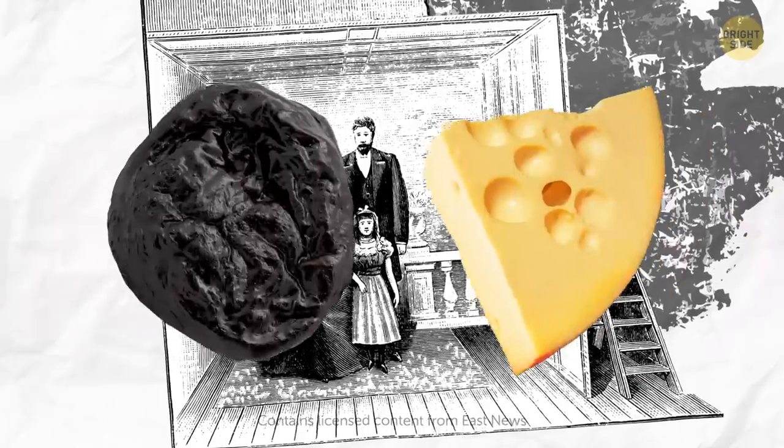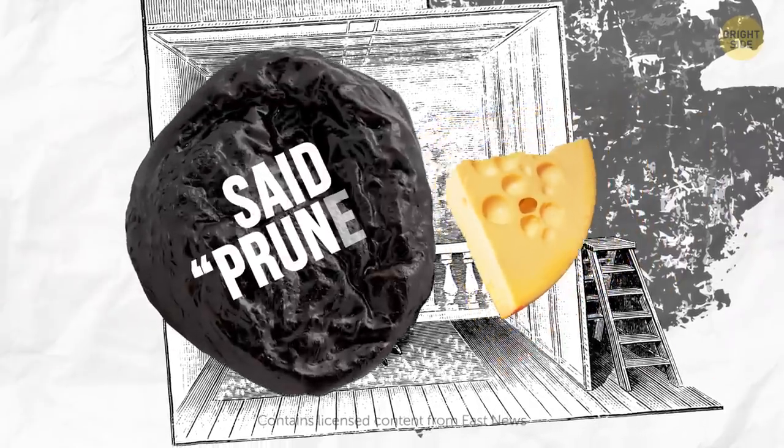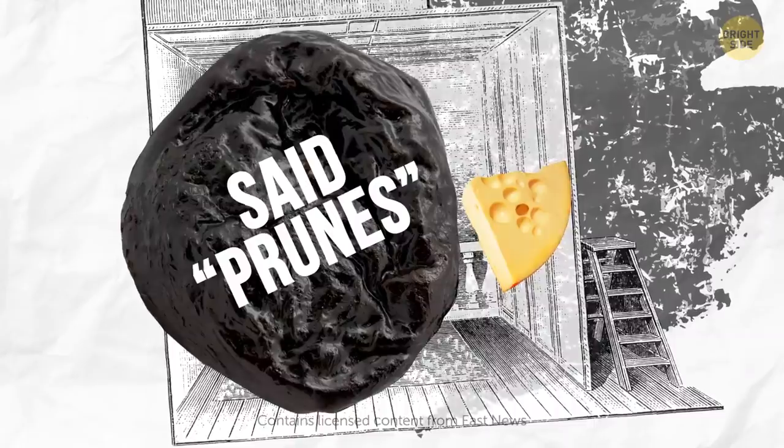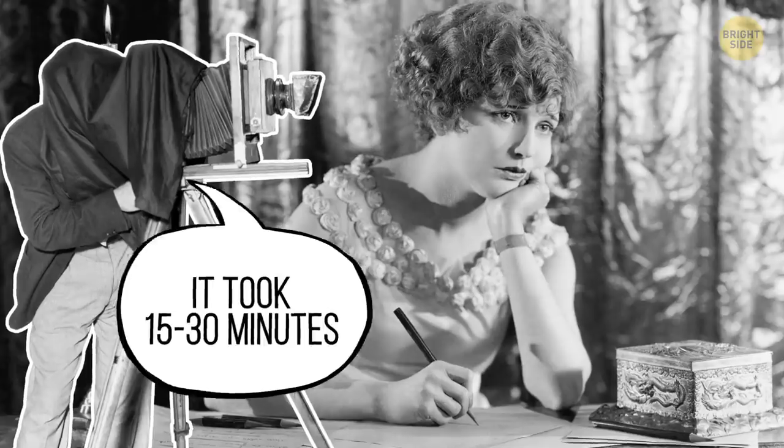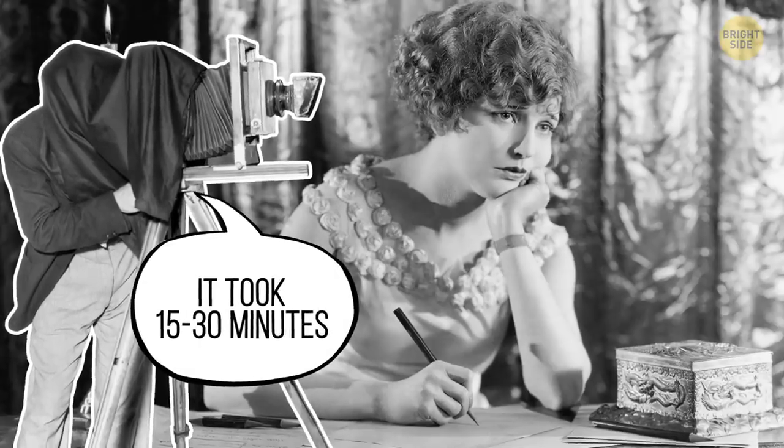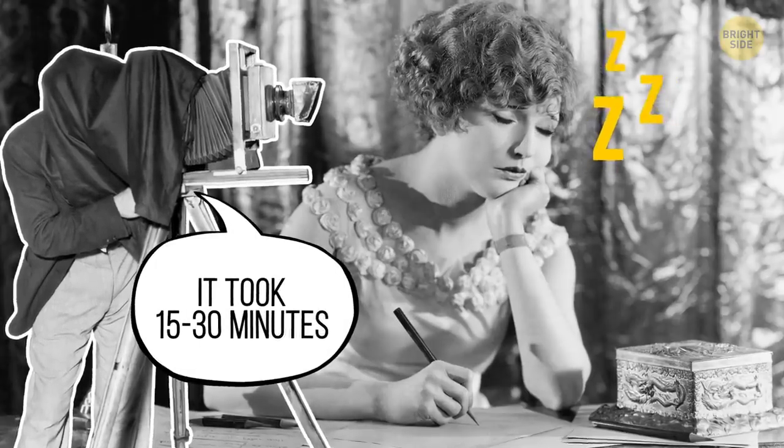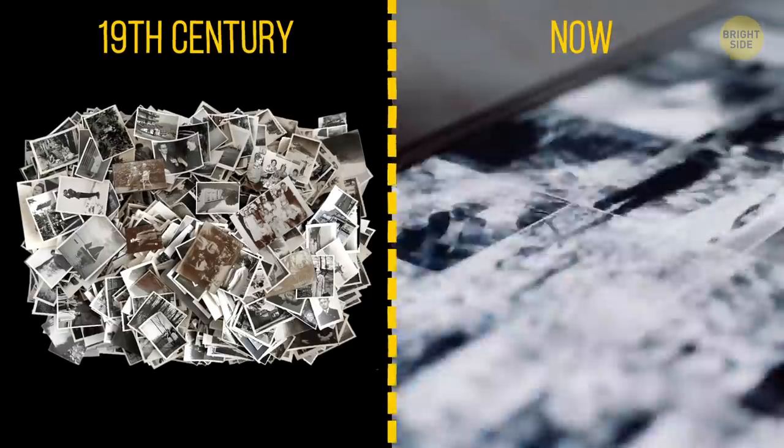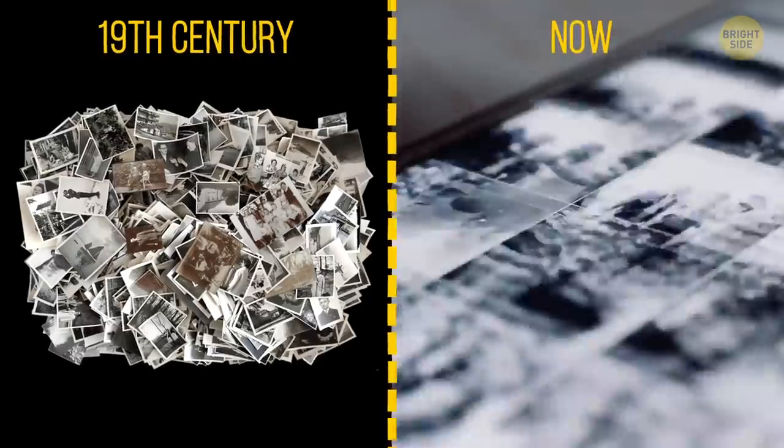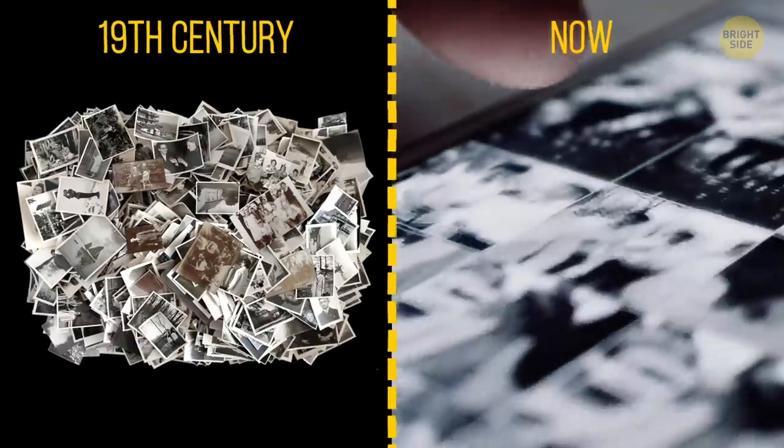People getting their picture taken during Victorian times said prunes instead of cheese. Apparently, shaping the mouth this way gave them a nobler look. Plus, it could take 15 to 30 minutes just to take one photo. Imagine having to smile for that long. We take as many photos every 2 minutes now as were taken during the whole 19th century.